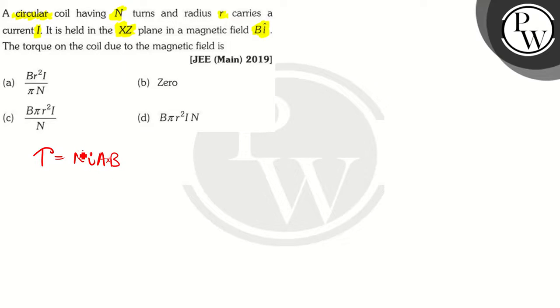So here N is the number of turns on the coil, I is the current of the coil, A is the area of the coil, and B is the magnetic field.